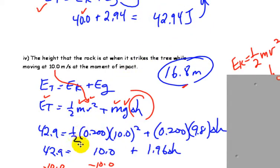The kinetic energy part, one-half times 0.2 times 10 squared, and mgh. Okay, so working this, 10 times 10 is 100, half of that's 50, 0.2 of that is 10, so we get 42.9 equals 10 plus 1.96H.